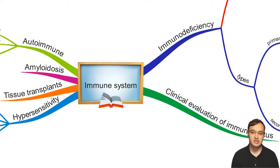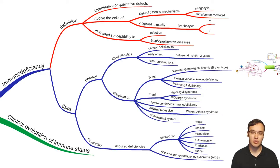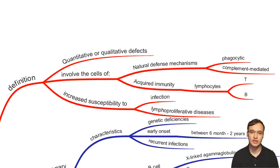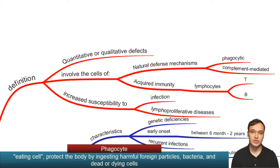We will talk about immunodeficiency since Bruton's X-linked agammaglobulinemia is part of a primary immunodeficiency. If we define immunodeficiency, we will see that it's a quantitative or qualitative defect of some cells, like lymphocytes — T and B lymphocytes — or phagocytic cells, or the complement-mediated system.